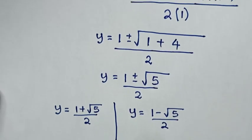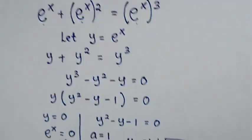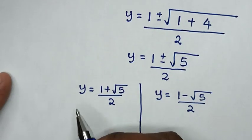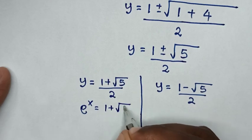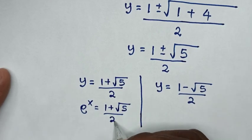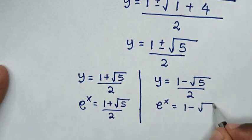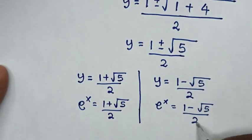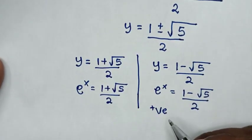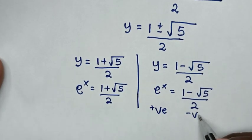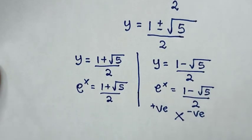Substituting back using y equals e power of x: e power of x equals (1 plus square root of 5) over 2, and also e power of x equals (1 minus square root of 5) over 2. However, e to the power of any number is always a positive value, and (1 minus square root of 5) over 2 is negative. So positive cannot equal negative, and this solution is also rejected.